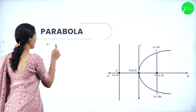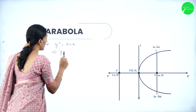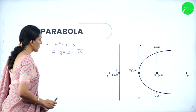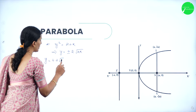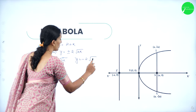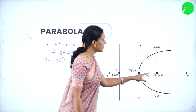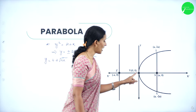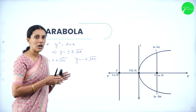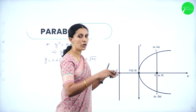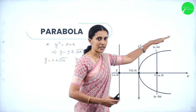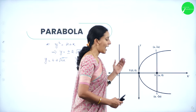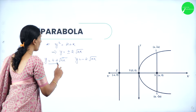From y² = 4ax, we get y = ±2√(ax). As x moves from 0 to infinity, y increases from 0 to infinity on the upper side and decreases from 0 to minus infinity on the lower side. The curve extends on both sides of the x-axis to infinite values.